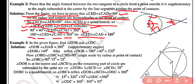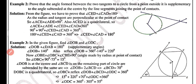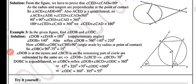Therefore angle CED + angle CAD = 180 degrees. Thus the angle formed between two tangents to a circle from a point outside it is supplementary to the angle subtended at the center by the line segment joining the points of contact. This completes example number two.